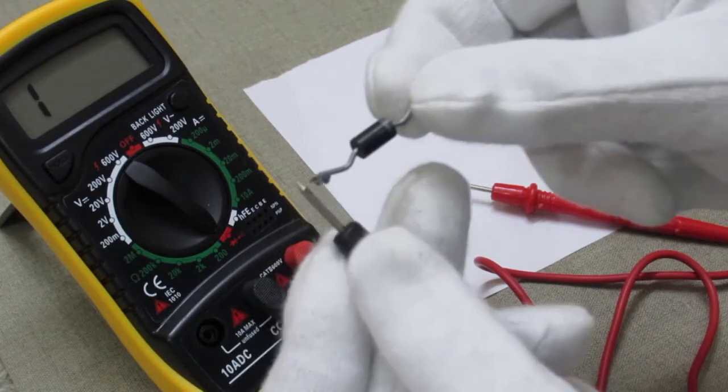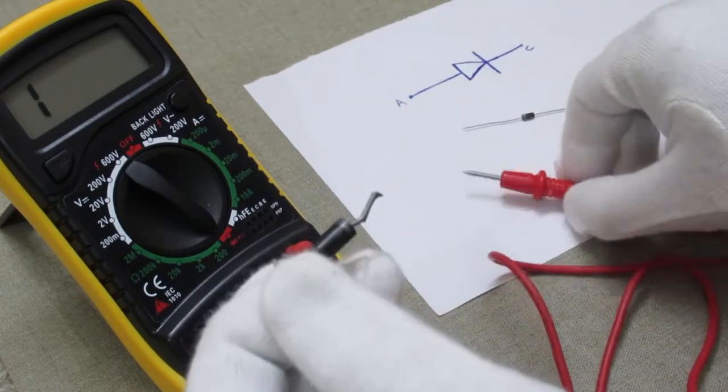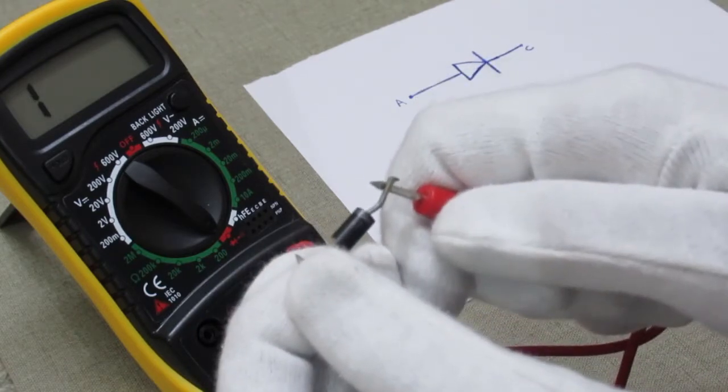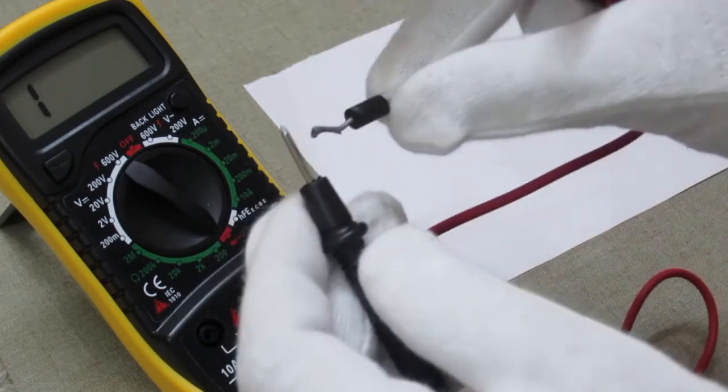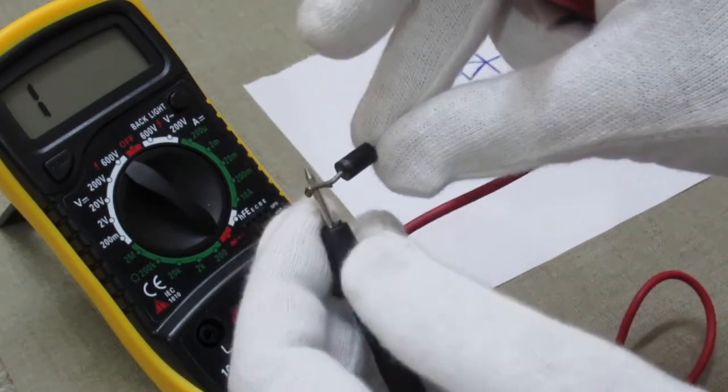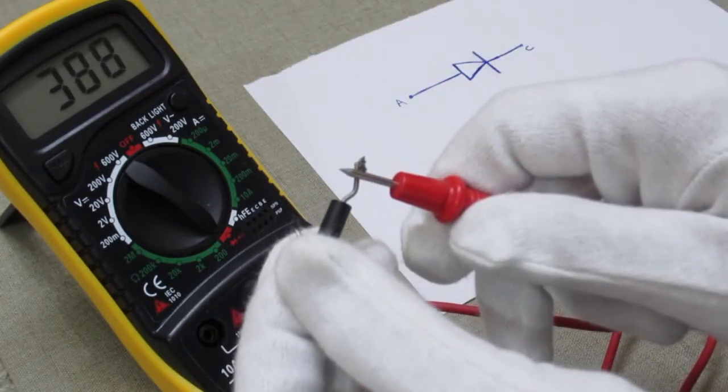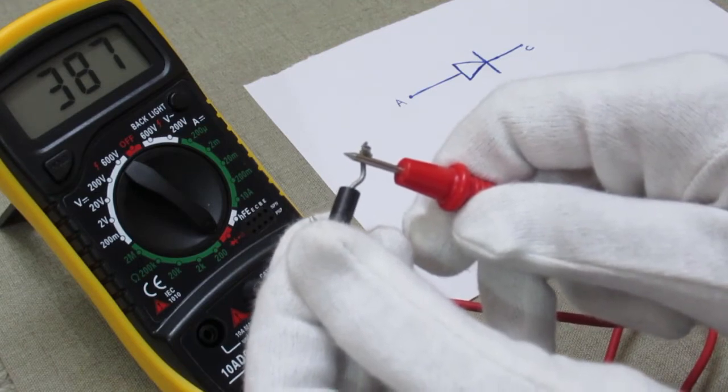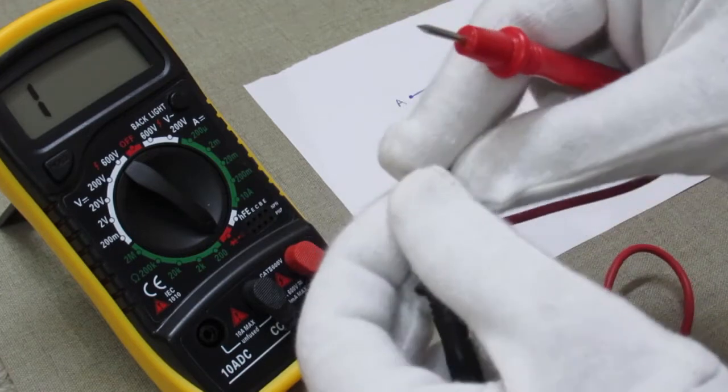Touch the black probe to anode and red probe to the cathode point. In this condition there is no display on the multimeter. Reverse the diode, then check. The multimeter is showing some numbers. That means this diode is working properly.